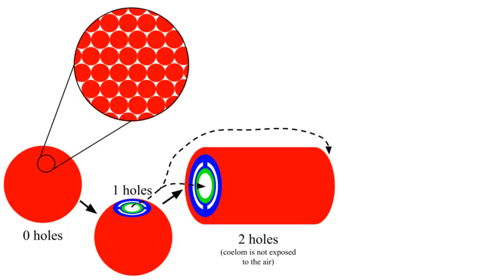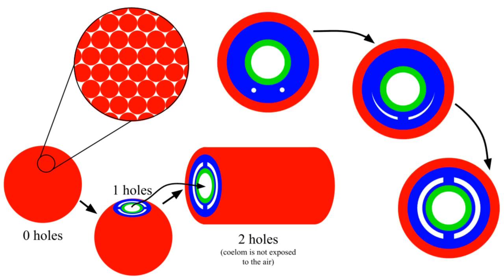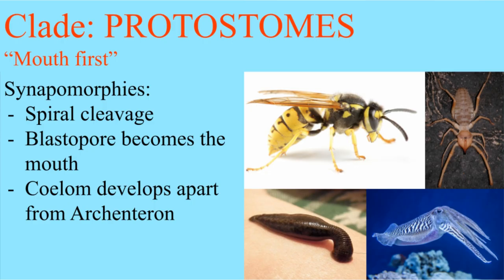If the cells of your blastula are offset from each other, the first hole you develop is the mouth, and your coelom and gastrointestinal tract develop separate from each other, you are a protostome.